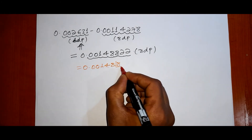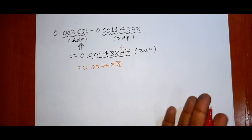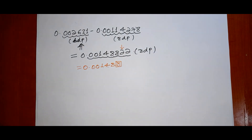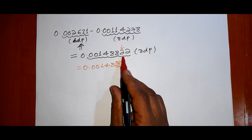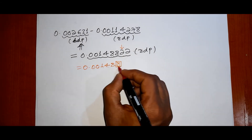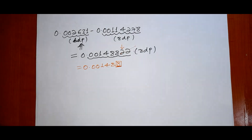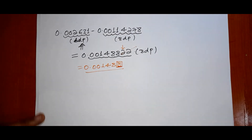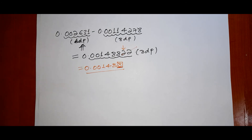We check the next term after the sixth decimal place to decide rounding — whether it is below five or above five — and apply the rule accordingly. This gives the appropriate solution for this example.